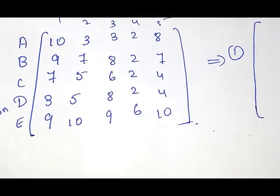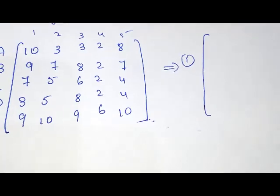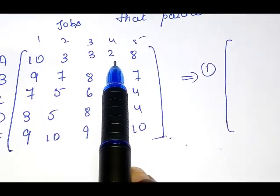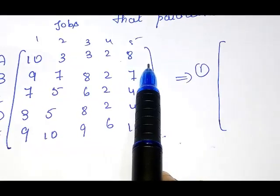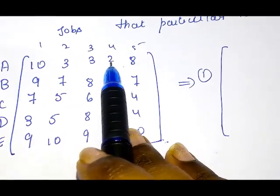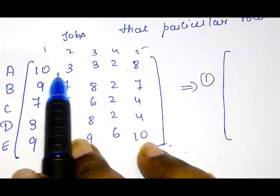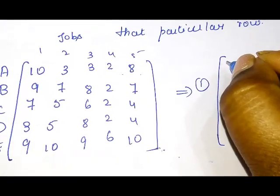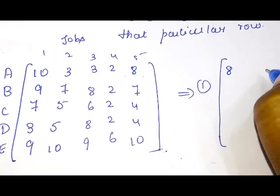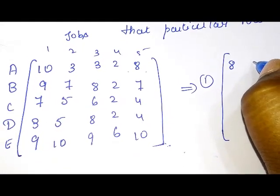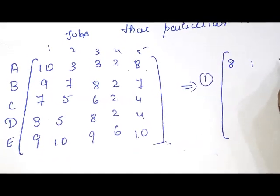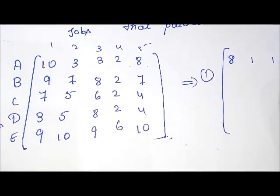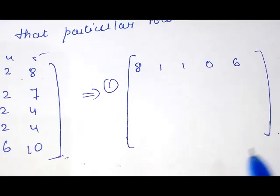Step 1 is row minimization. For the first row, we find the least element — which is 2 — and subtract it from every element in that row. So: 10 minus 2 is 8, 3 minus 2 is 1, 3 minus 2 is 1, 2 minus 2 is 0, and 8 minus 2 is 6. We have completed this particular row.